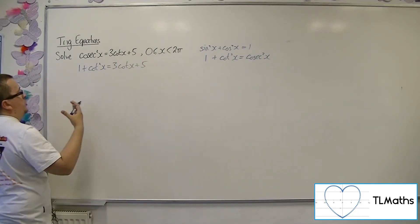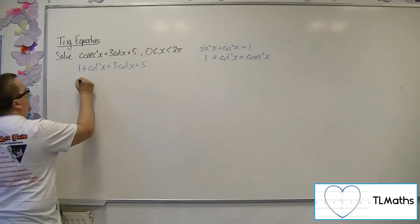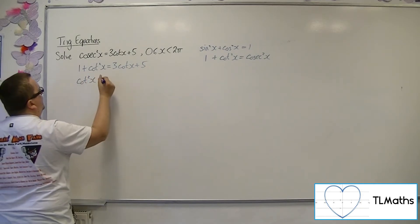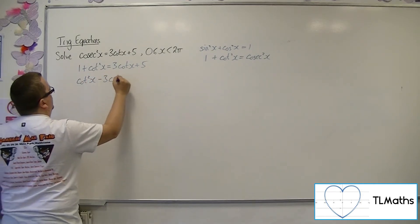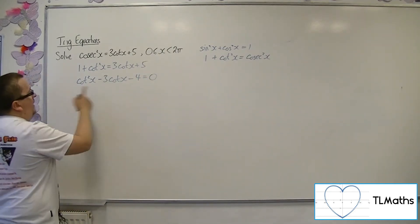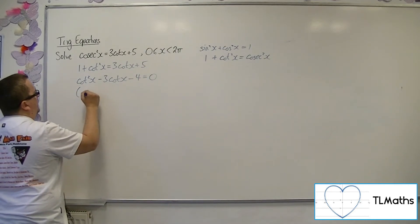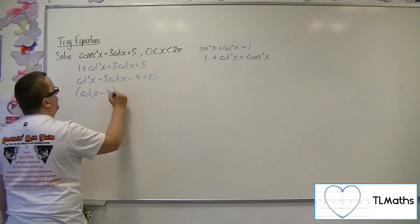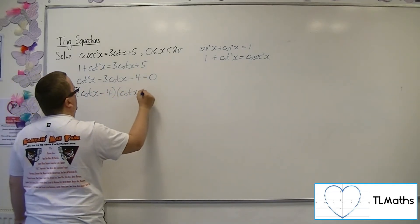So if I rearrange this to get everything onto the left hand side, this is cot squared x minus 3 cot x minus 4 equals 0. This can be factorised to get cot x minus 4 times cot x plus 1.